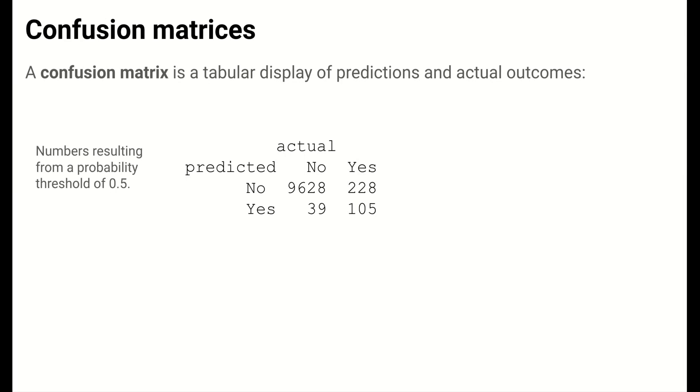In classification settings, a tabular display called a confusion matrix is a useful way to organize information on predicted and actual outcomes to see the accuracies and inaccuracies of our model's predictions. In the example here, we used a probability threshold of 0.5 for the previous logistic regression model to make hard predictions for all cases in the training set. A threshold of 0.5 is likely not ideal, but we'll explore that idea a little later in this video.